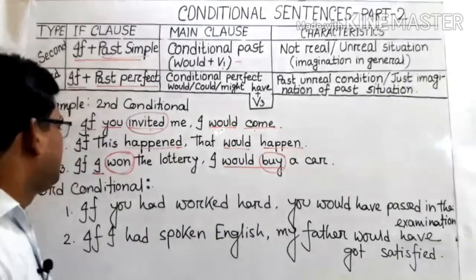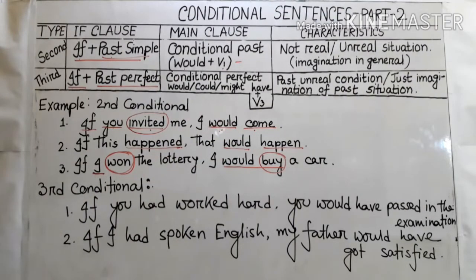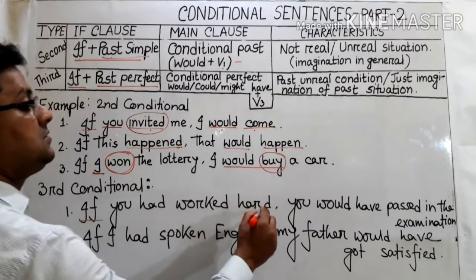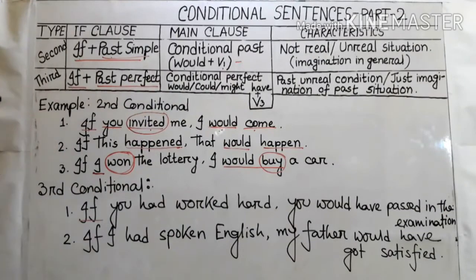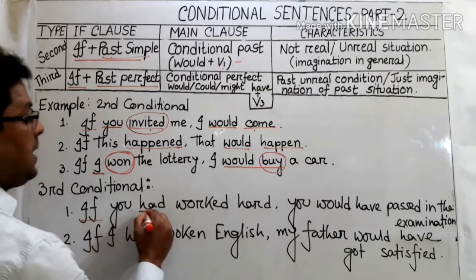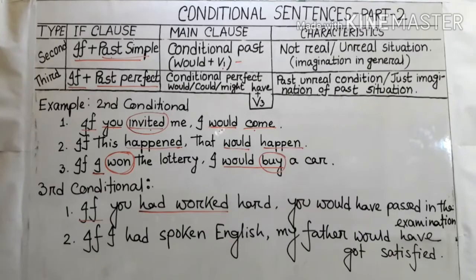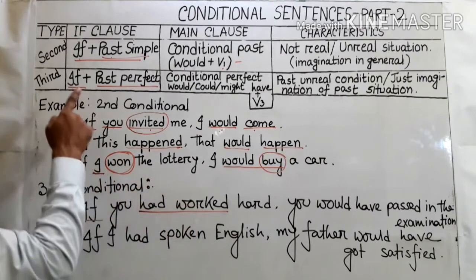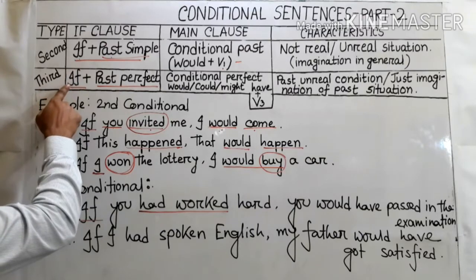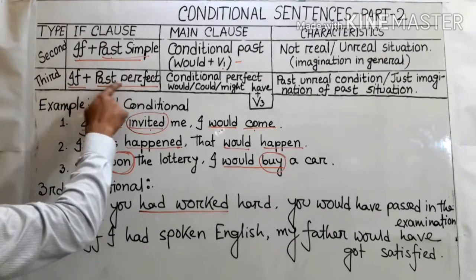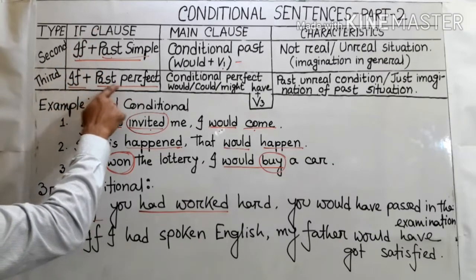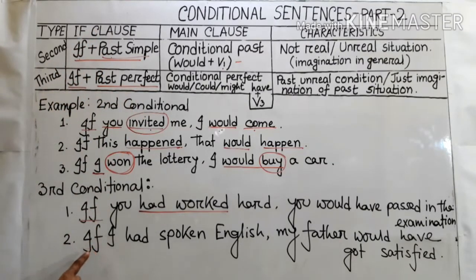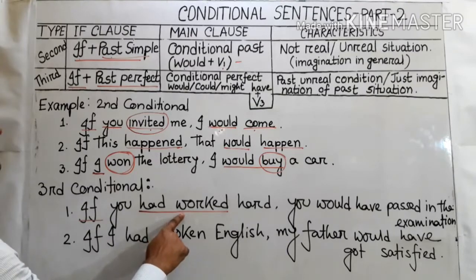Here I have written two examples of the third conditional. First: 'If you had worked hard, you would have passed the examination.' Here I used 'had' plus 'worked' — that means after 'if' I have used the past perfect tense. From the table, the if-clause contains 'if' plus past perfect, meaning 'had' plus verb 3.